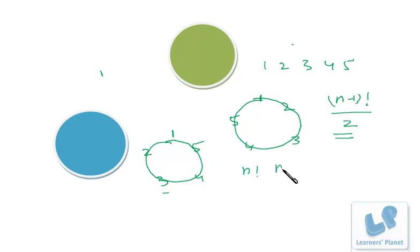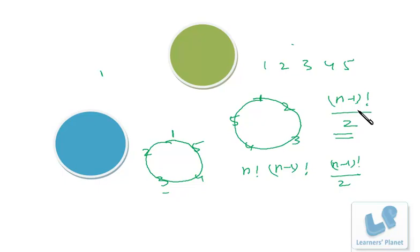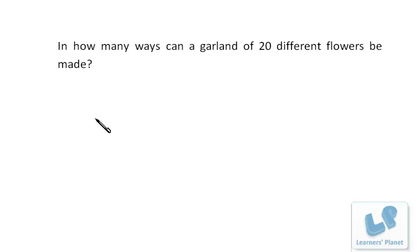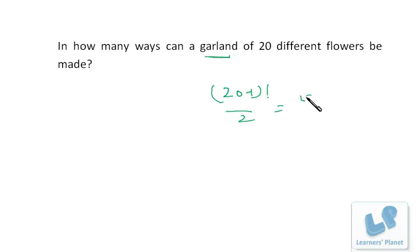To summarize the four cases: first, linear arrangement = n!; second, circular arrangement when clockwise and anticlockwise are different = (n−1)!; third, circular arrangement when neighbor order is considered the same = (n−1)!/2; fourth, garland/pearl string arrangement = (n−1)!/2. Now let's apply this. For 20 different flowers arranged in a garland, it's a garland problem so the answer is (20−1)!/2 = 19!/2.